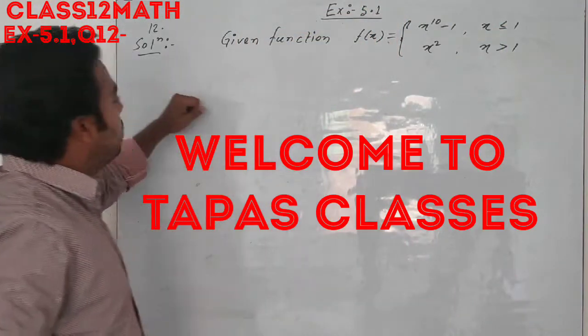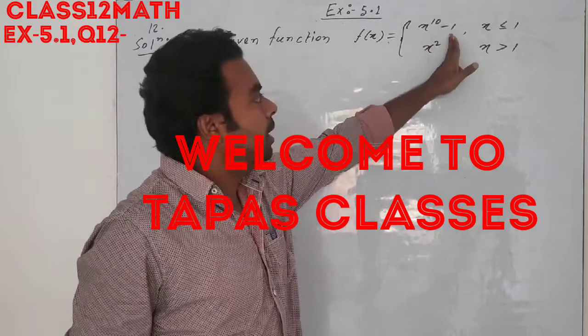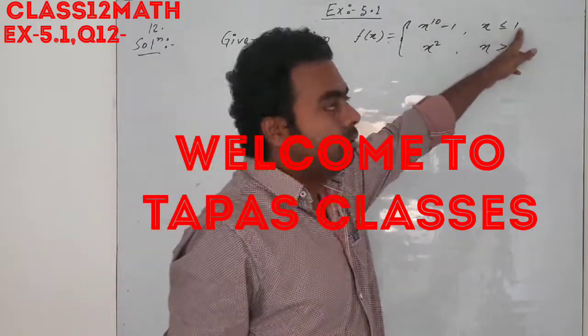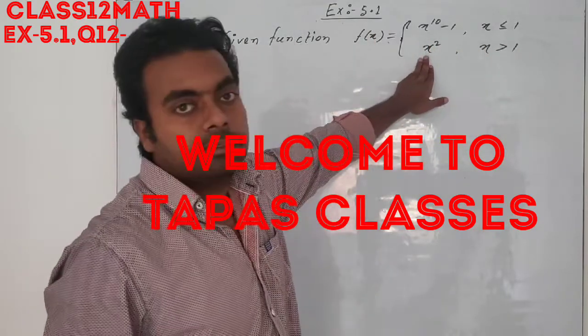Now students, move to question number 12. Given function f(x) is equal to x to the power 10 minus 1 when x less than or equal to 1, and when x is greater than 1, the function is x square.